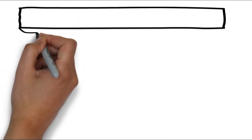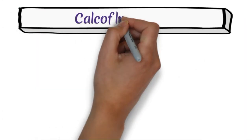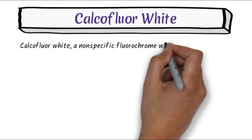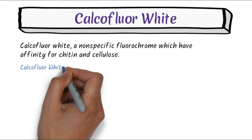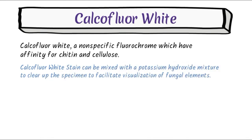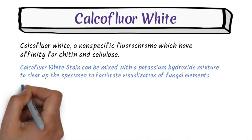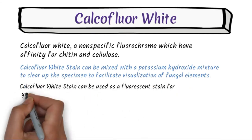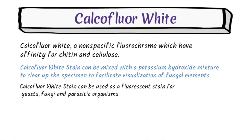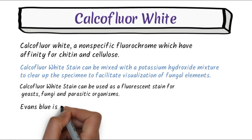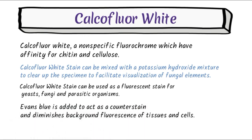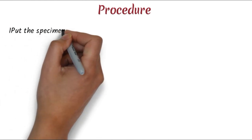Another important stain used in mycology is calcofluor white. Calcofluor white is a non-specific fluorochrome which has affinity for chitin and cellulose. It can be mixed with a potassium hydroxide mixture to clean up the specimen and facilitate visualization of fungal elements. It is also used for several organisms such as yeast, fungi, and parasitic organisms. It can also be used with a counterstain such as Evans blue.